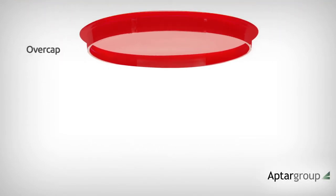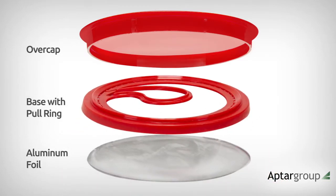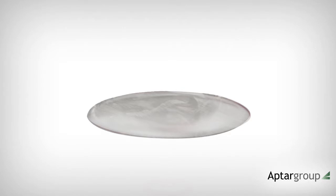The complete BAP solution has three main components: an over cap which can be attached or detached from the base, a base with a pull ring, and the aluminum foil with plastic layers on both sides.